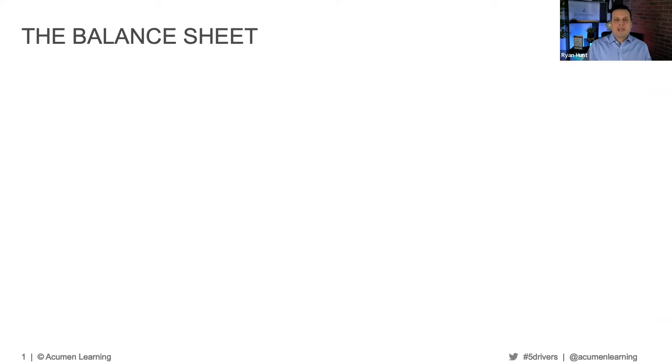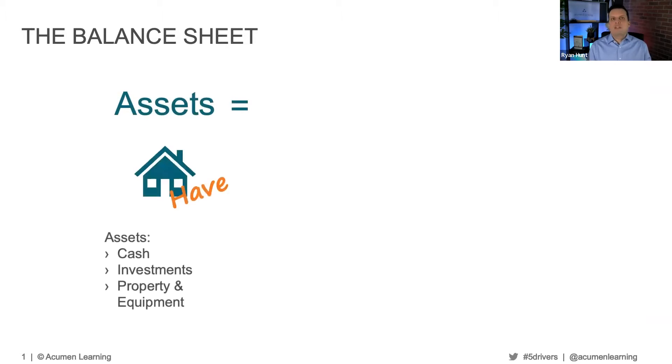When you look at the balance sheet, there are three parts we have to be aware of. First are assets. Assets are anything that we own and control that have value — things like cash, investments, property and equipment. Those are all assets.